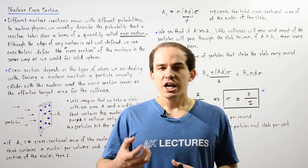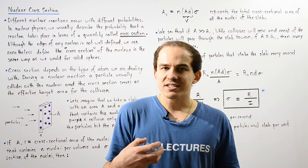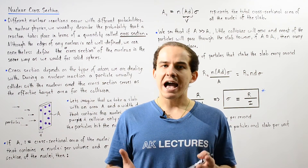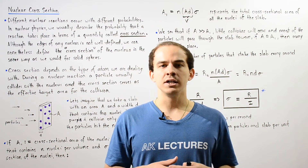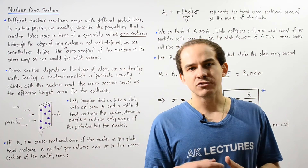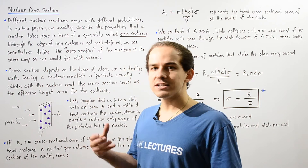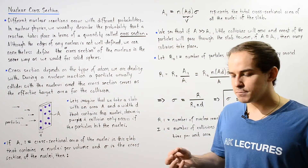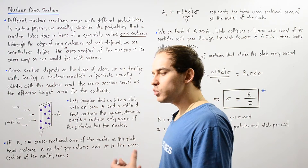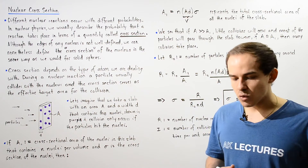If we imagine that our nucleus is a solid sphere, then the cross-section of our nucleus basically represents the actual cross-sectional area of our nucleus. Of course, we know that this is not true. A nucleus doesn't actually have a well-defined cross-sectional area, because the nucleons — the protons and neutrons — do not always act as particles. They can also act as waves.